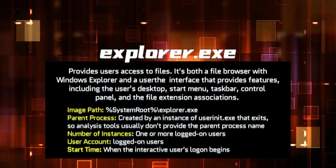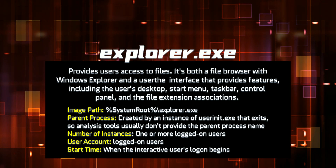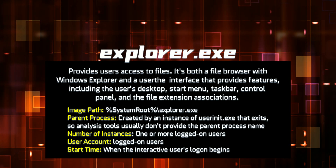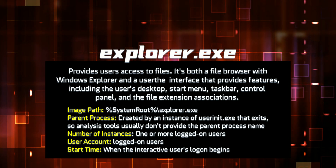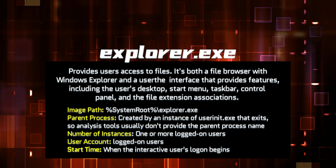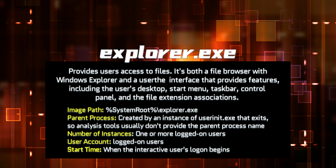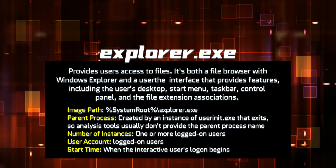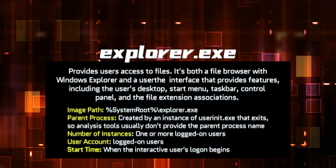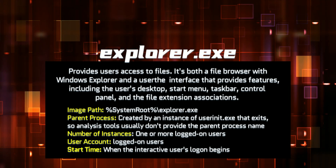Last, we have explorer.exe, which provides users access to files. It's both a file browser with Windows Explorer and a user interface that provides features including the user's desktop, start menu, taskbar, control panel, and file extension associations with shortcut files. Its image path will be the system root and not System32. The parent process is userinit.exe; however, this exits, so analysis tools don't provide parent process names. There can be one or more instances per logged-on user, and the user account will be the logged-on user. It starts when the owner's interactive logon begins.